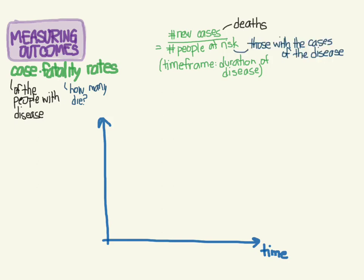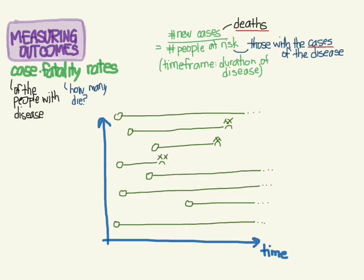Let's draw the diagram from our previous video where we represent someone's disease state with a little O for onset, showing how long they have the disease and when they die. Let's say this was the onset of cancer. One person continued to live — maybe on a great new chemotherapy regimen. One unfortunately had a very aggressive cancer and ended up dying. Let's count: how many deaths do we have? One, two, three.